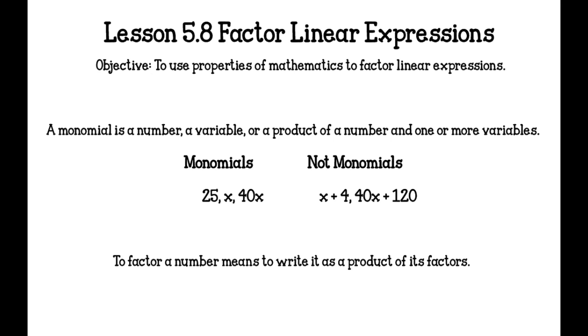A monomial, and that's one of your vocabulary words, a monomial is a number, a variable, or a product of a number in one or more variables. So it means that they're multiplied together. If you look at the monomials, they have 25x or 40 times x. They're all together, there's no addition or subtraction signs between them. They are not monomials if they have those addition signs separating them.